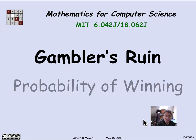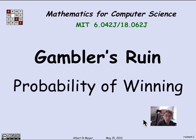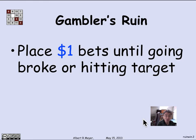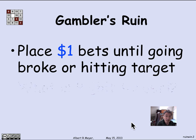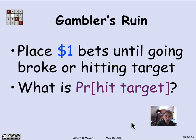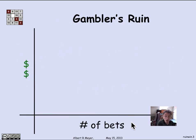We'll begin by trying to analyze the issue of the probability of winning this so-called game. Gambler's ruin is a setup where you're going to place unit bets — call them $1 bets — until going broke or hitting a target. There's a probability of winning each bet, and you keep making $1 bets until you hit some pre-specified target T, or you run out of money — that's called going broke.